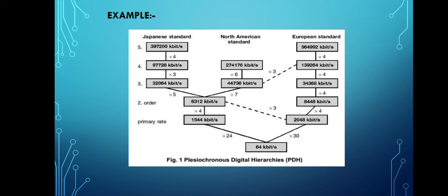Now, the example of PDH. There are different types of standards like Japanese standards, North American standards, and European standards. You can see how large quantities of data are split into small quantities, which helps in data transfer easily. In this, there are different types of levels. In Japanese standards, at level 5, the data of 397,200 kbps is split into 497,728 kbps, and again it splits into smaller amounts of 32,064 kbps, and at the last level it is converted into 64 kbps.